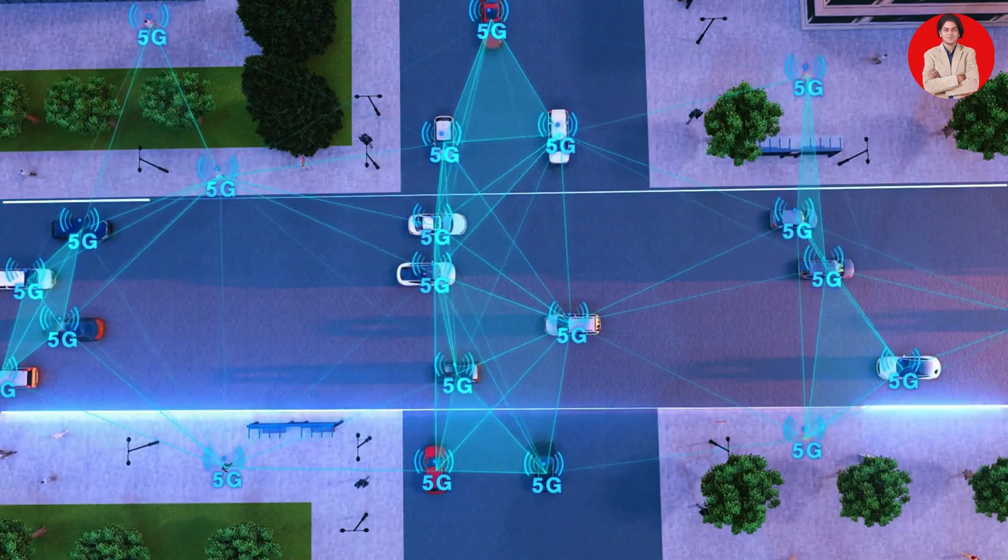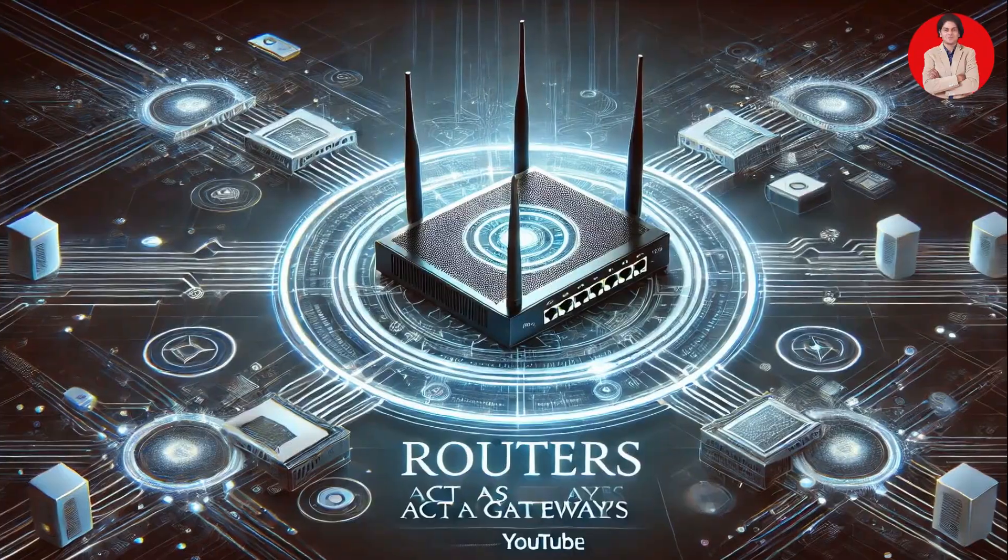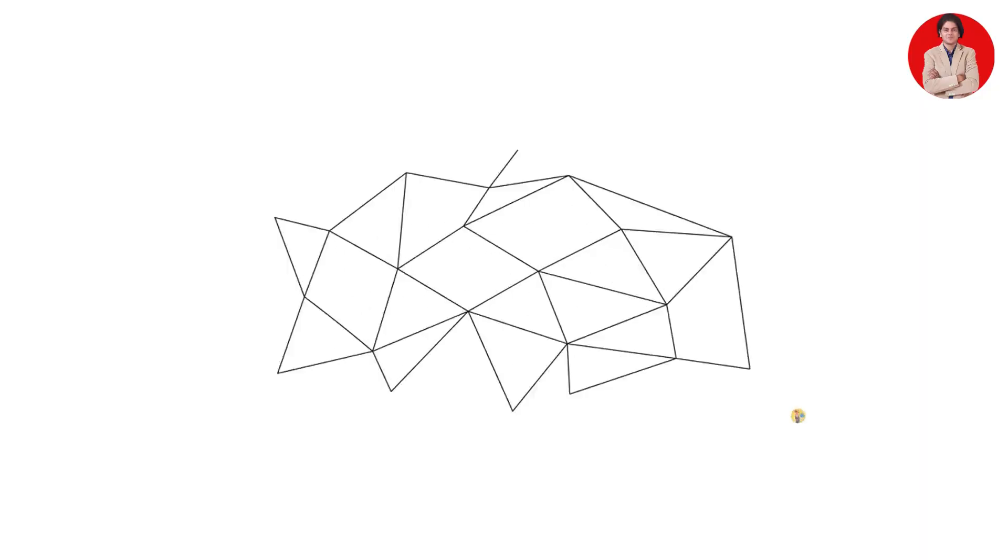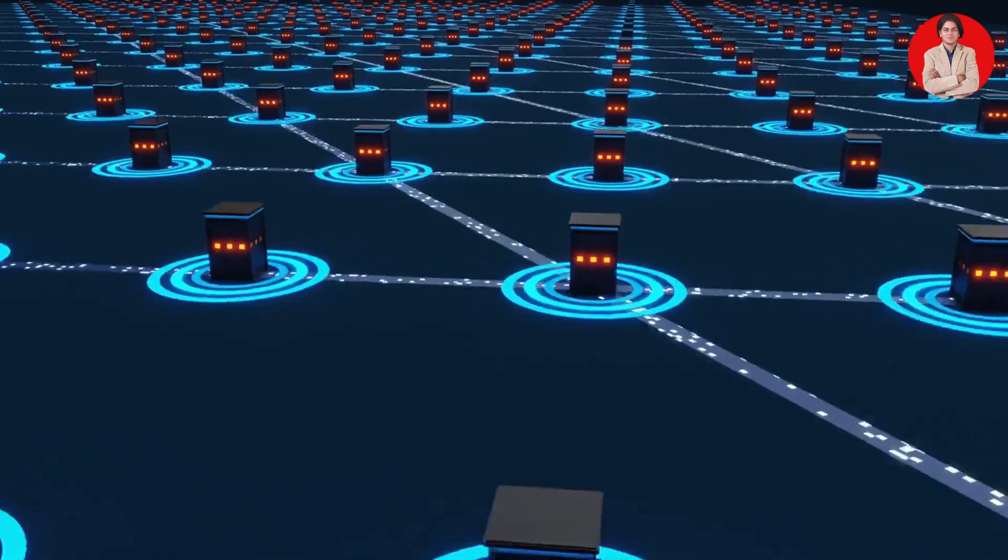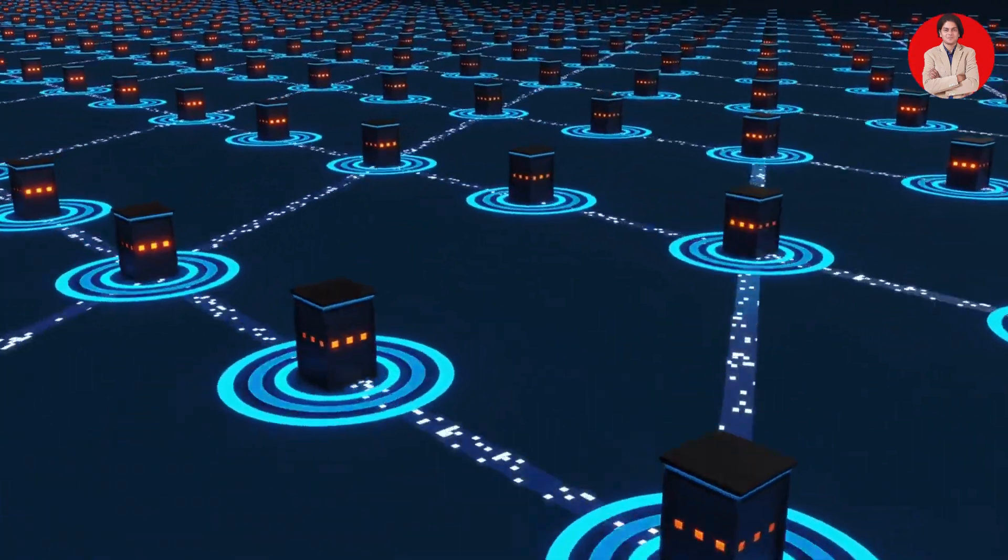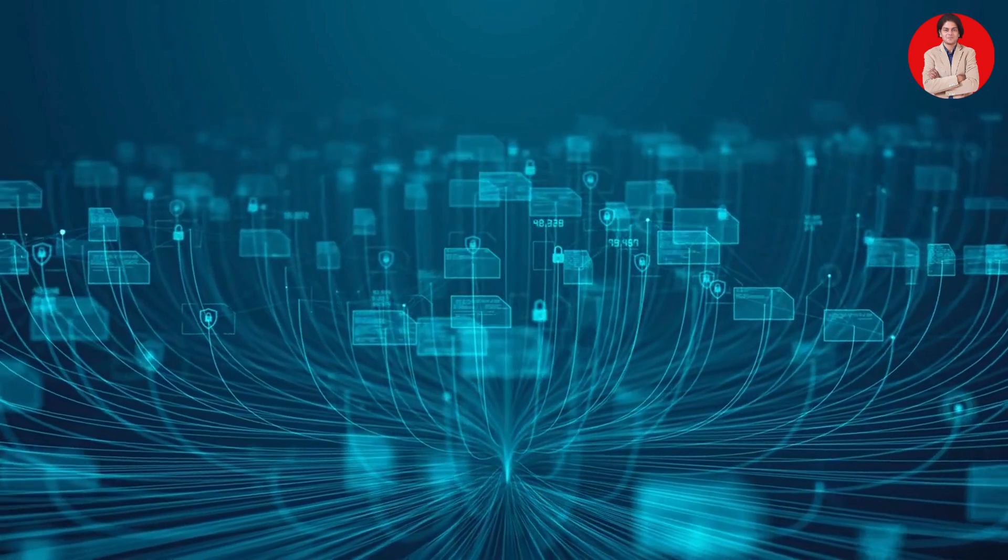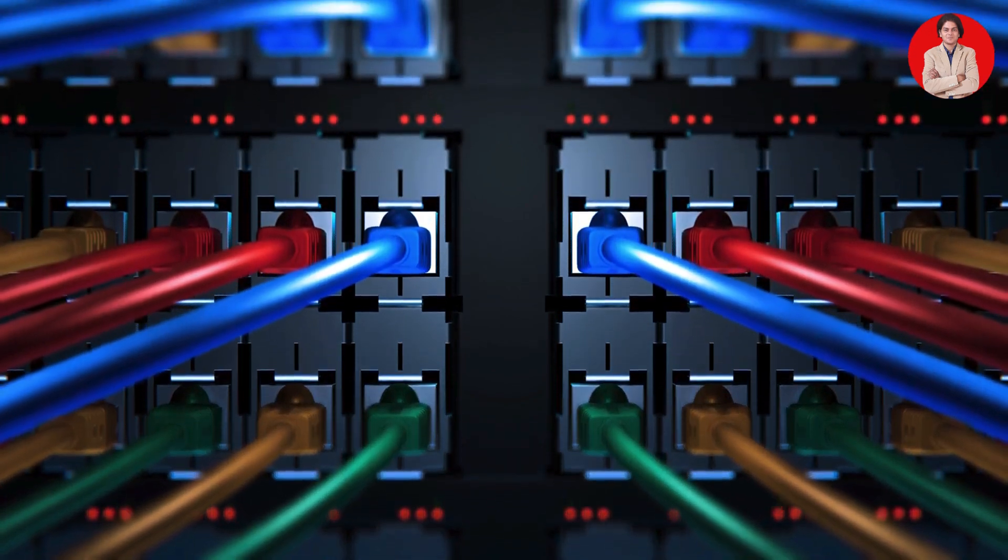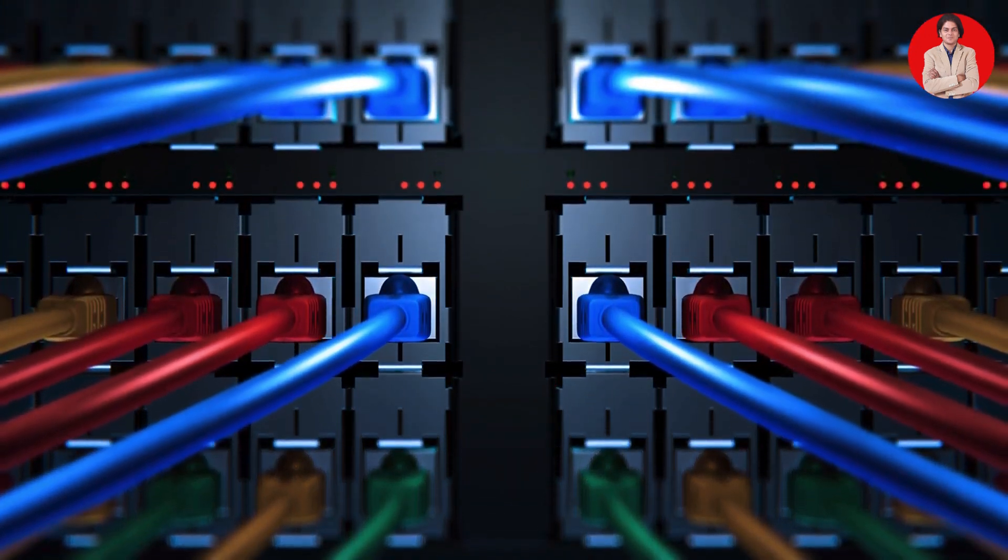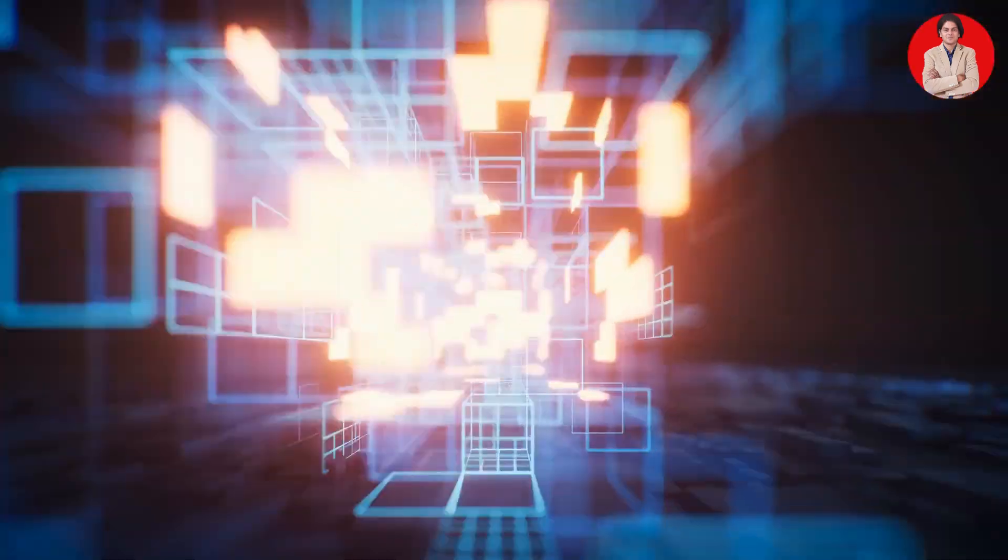Routers: Devices that direct traffic between networks. Routers act as gateways connecting different networks together and ensuring that data packets reach their intended destinations. Switches: Devices that connect devices within a network. Switches learn the MAC addresses of connected devices and use this information to forward data packets efficiently.